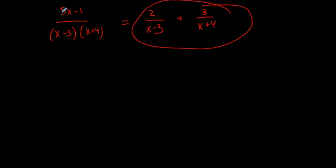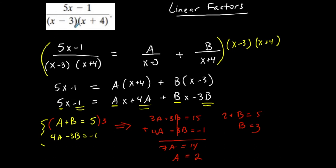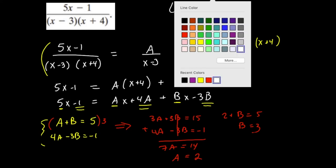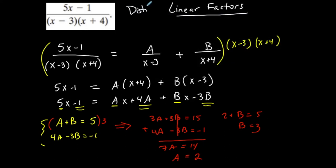So now I have my A and B. Therefore, 5x minus 1 over (x minus 3)(x plus 4) equals 2 over (x minus 3) plus 3 over (x plus 4). This is my partial fraction decomposition — I take a single fraction and separate it into the sum of different fractions. In this case we had distinct linear factors as our denominators.